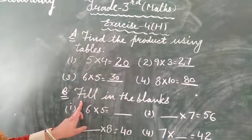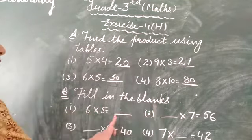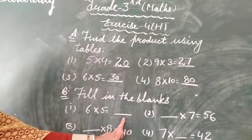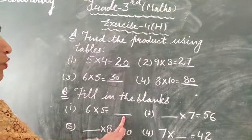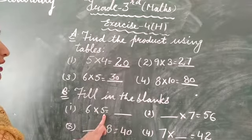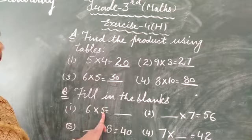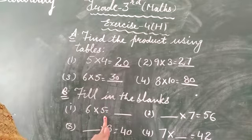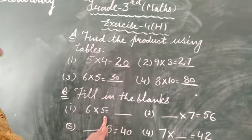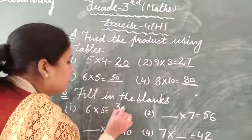Next second question, fill in the blank. Blank means missing space is given to you. We have to fill that. 6 multiply with 5. Means read out table of 5 up to number 6. Same as in first question. So 5-1s are 5, 5-2s are 10, 5-3s are 15, 5-4s are 20, 5-5s are 25, 5-6s are 30.